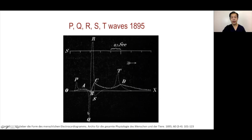Within the QRS complex, the first negative wave was labeled Q, the first positive wave labeled R, and the second negative wave labeled S. Conventionally, the second positive is labeled R prime. And the repolarization, the T wave, is labeled as the T wave.